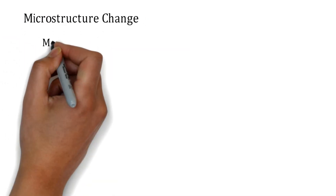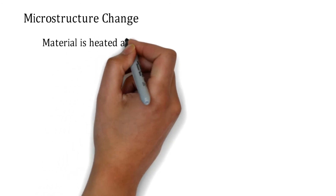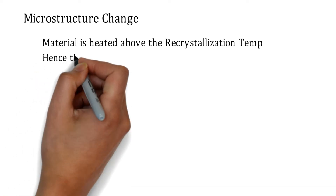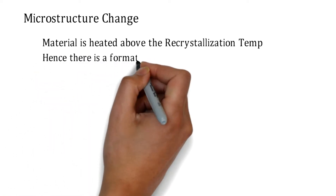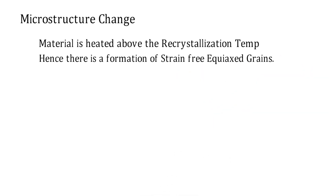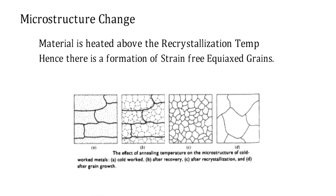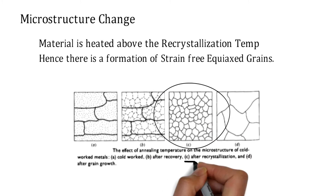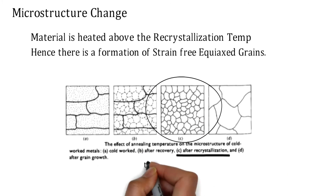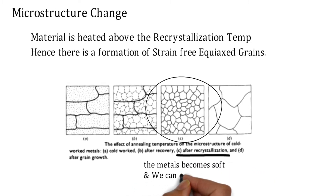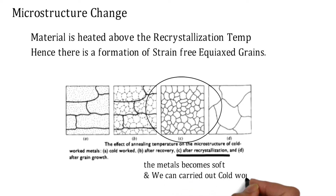Let's study the microstructure changes during process annealing. The material is heated above the recrystallization temperature, and due to that heating there is a formation of a strain-free equiaxed grain structure — equiaxed meaning having equal grains. This image shows the equiaxed grain structure after recrystallization. At this point the metal becomes soft and we can carry out cold working processes.